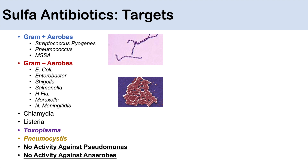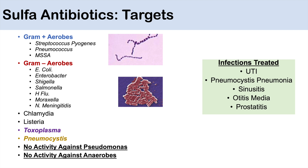Because Septra covers many gram-negative rods like E. coli, the infections typically treated with it include UTIs, Pneumocystis pneumonia particularly in AIDS patients, sinusitis and otitis media because trimethoprim-sulfamethoxazole covers H. flu and Moraxella, and also infections like prostatitis.